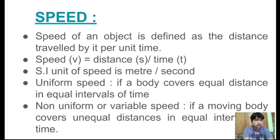What is uniform speed? Uniform means constant. If your speed is constant, then it is uniform speed. Equal distance will be covered in equal time intervals. If your speed is uniform — every 1 hour at 40 kilometers per hour — then you will cover 40 kilometers each hour.